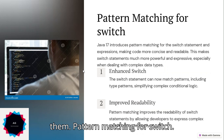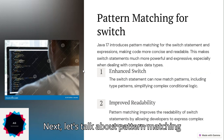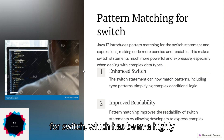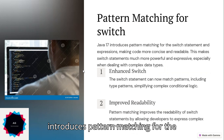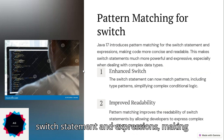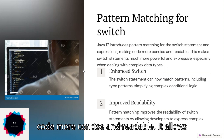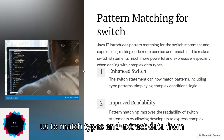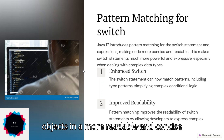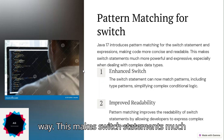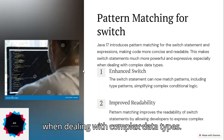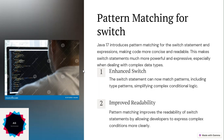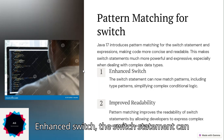Next, let's talk about pattern matching for switch, which has been a highly anticipated feature. Java 17 introduces pattern matching for the switch statement and expressions, making code more concise and readable. It allows us to match types and extract data from objects in a more readable and concise way, making switch statements much more powerful and expressive, especially when dealing with complex data types.